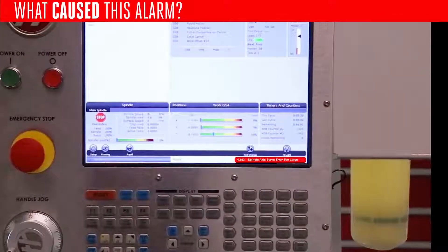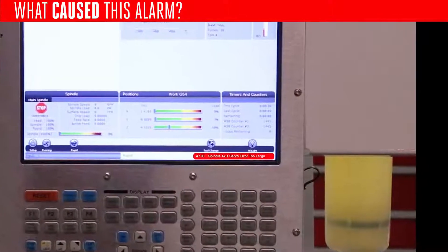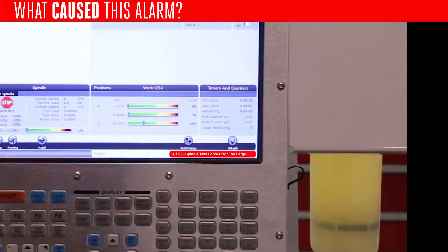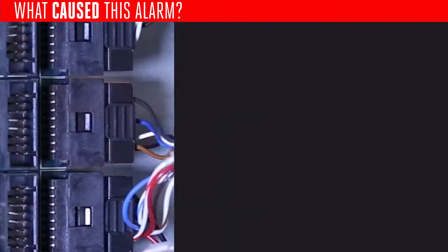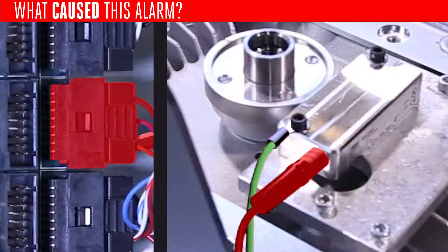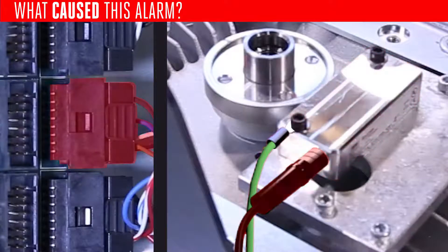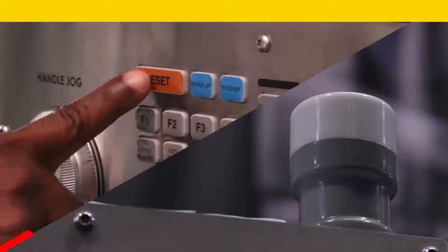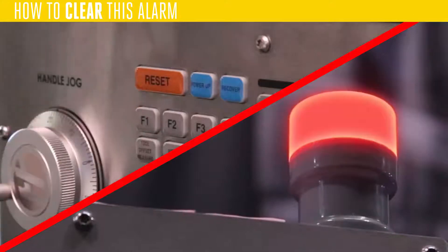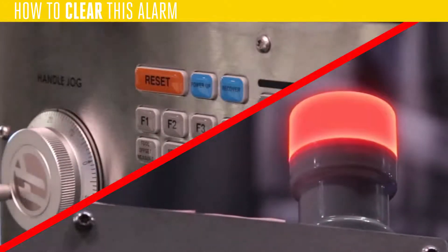Alarm 4.103 occurs when the spindle servo motor loses contact with its encoder. This can happen if the serial data cable to the encoder has come loose or is damaged, or if the encoder's read head has come out of alignment. You cannot clear this alarm until the issue is resolved. Let's troubleshoot this alarm.